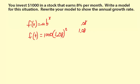And t is in terms of months. So this shows per month what's happening. The next part is rewrite your model to show annual growth rate. Now annual means per year. There are 12 months in a year.